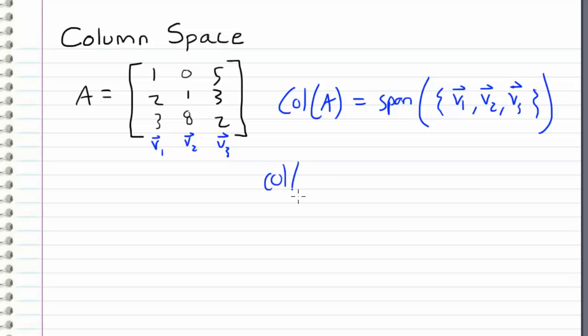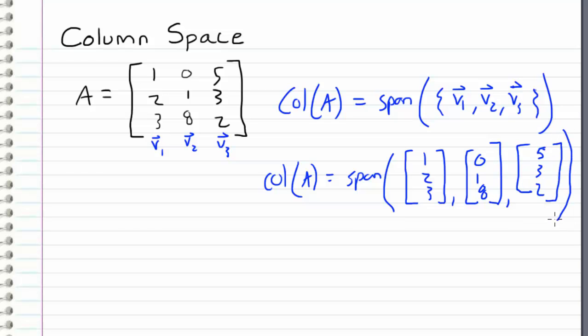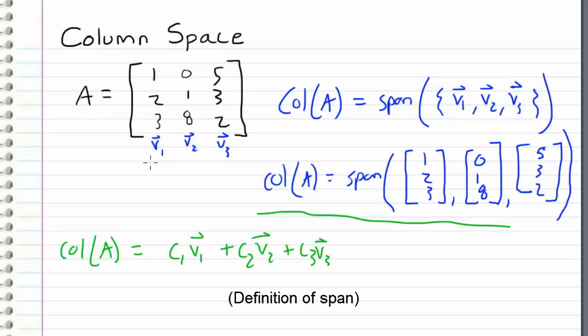And I can write this out explicitly as the column space of A is equal to the span of the vectors [1, 2, 3], [0, 1, 8], and [5, 3, 2]. So what this is saying is that the column space of A is equal to all of the linear combinations of the vectors that make up the columns.